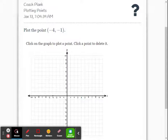If it's positive, you go up. If it's negative, you go down. So since it's negative one, we're going to go down one unit. There's our point.